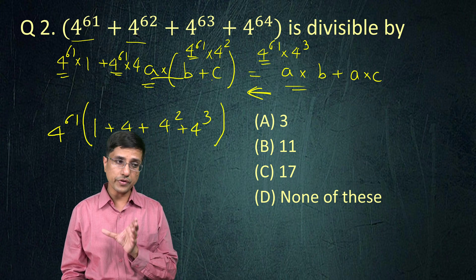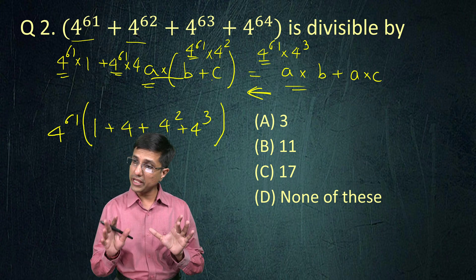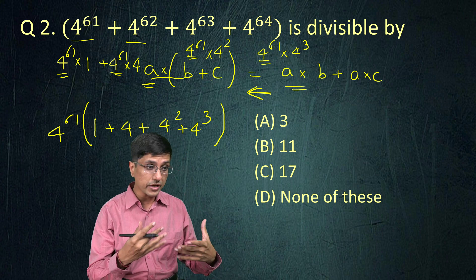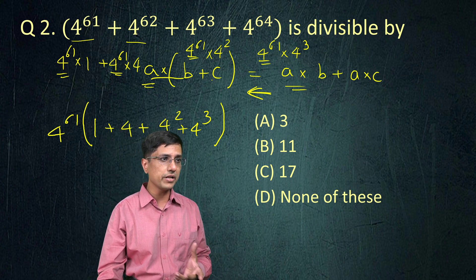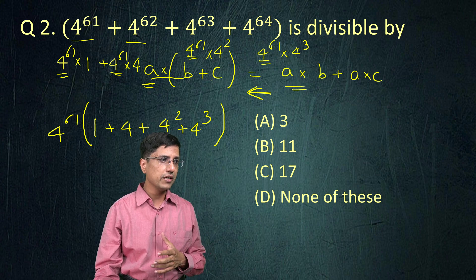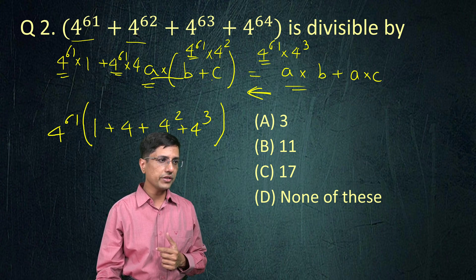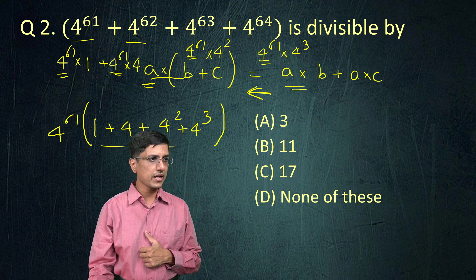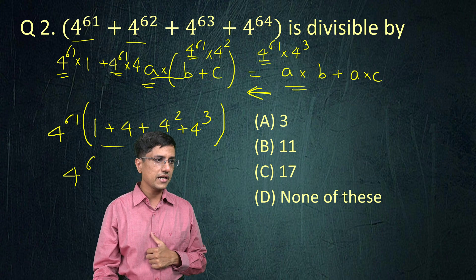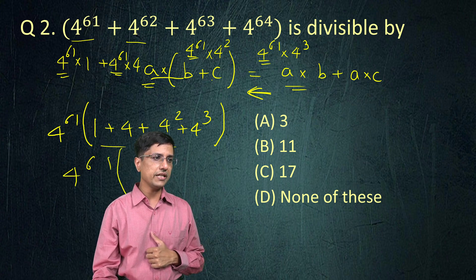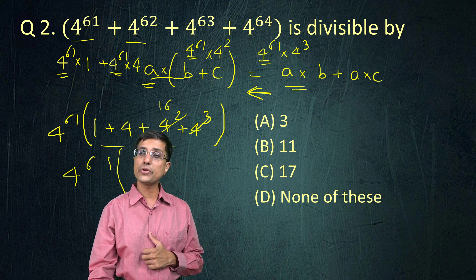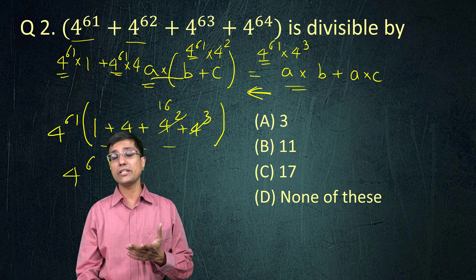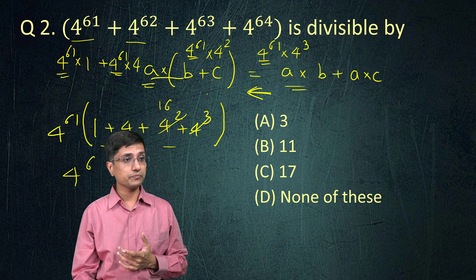Now it looks very simple — something we can solve. These were very complicated numbers, but now this looks like a much simpler expression. If I look a little more closely, 4 squared is nothing but 16, and 4 cubed is nothing but 64. Now, very importantly, you should know squares and cubes of numbers till at least 5, if possible till 8 or 10.